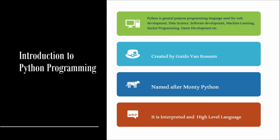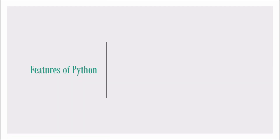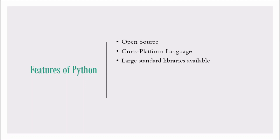Various features of Python: First, Python is open source — there is no licensing, so anybody can use it and share it. Second, it is a cross-platform language — Python can work on Linux, Windows, or any platform, and code written on one platform can be used on another. Python also has large standard libraries available, which are very useful for developing any application. Python is also an object-oriented language.